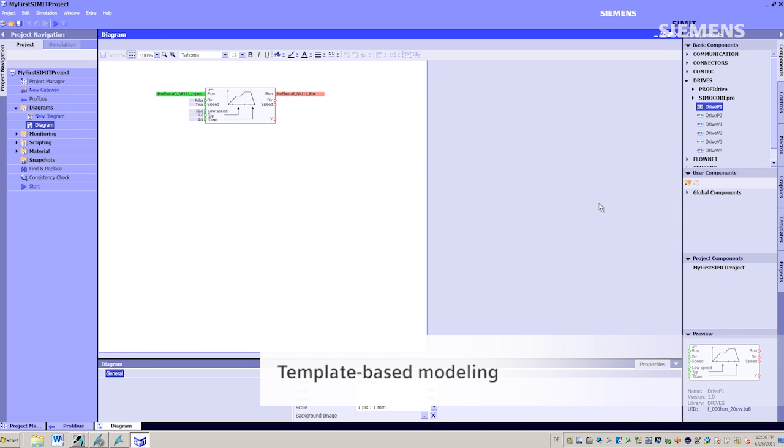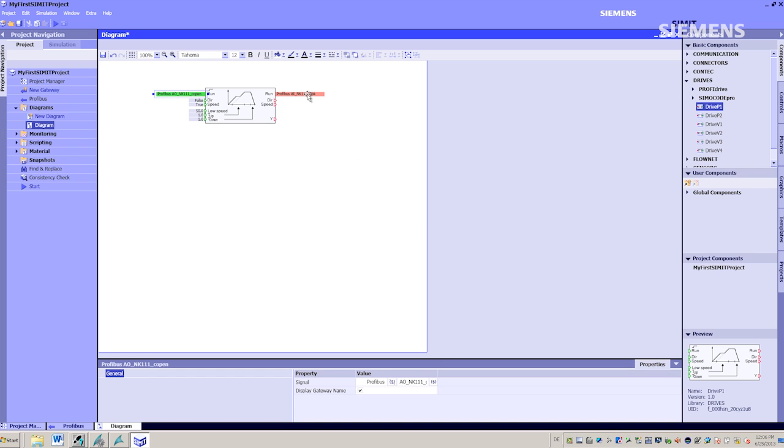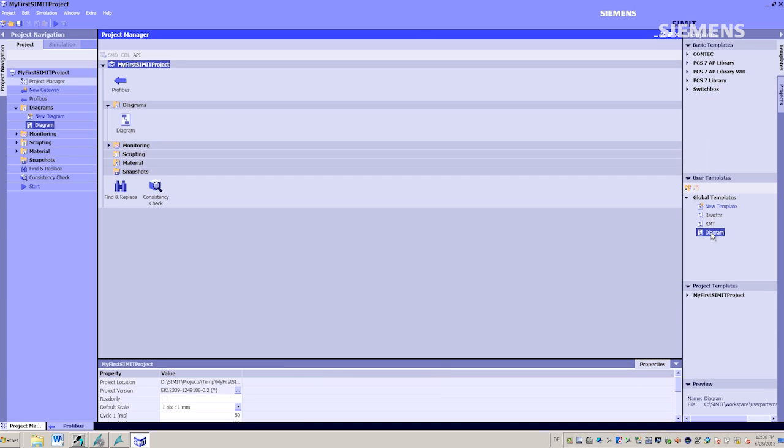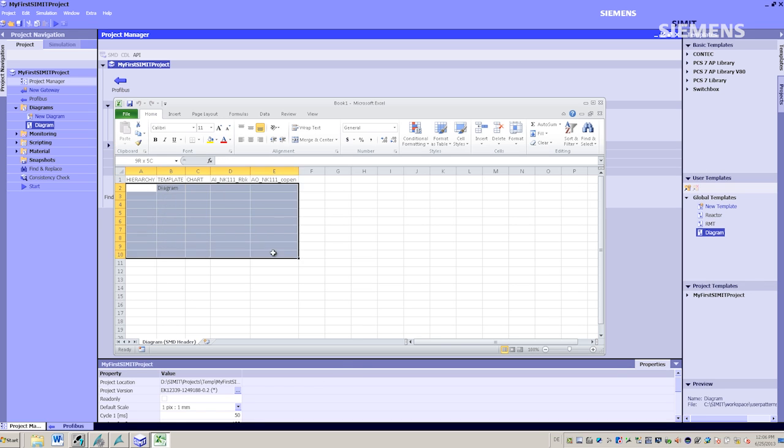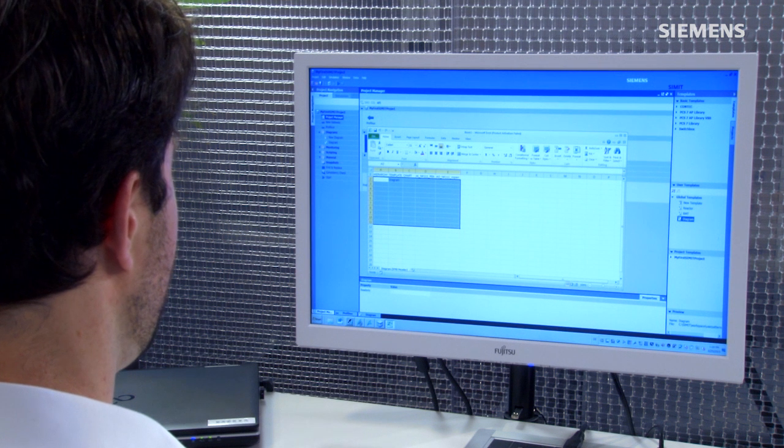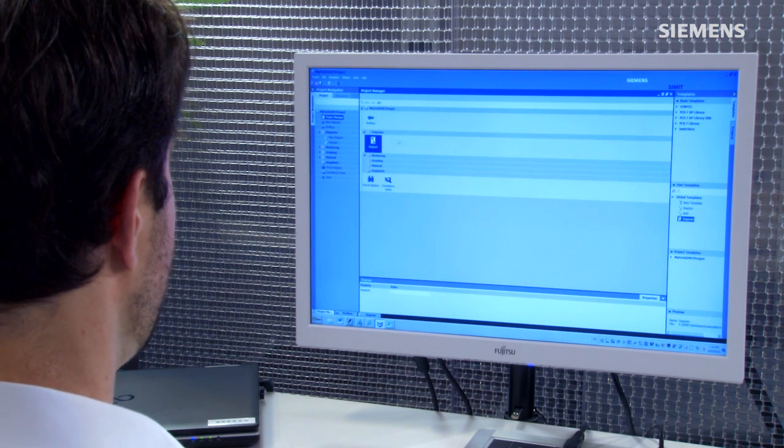I define my input and my output as variables. I can instantiate the template for future multiple use via the exported Excel table. Further on, I'll be using the standard templates contained in SIMIT.